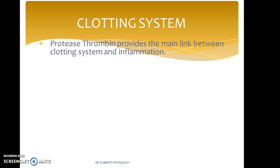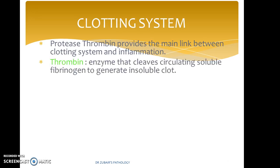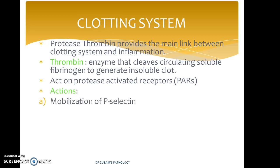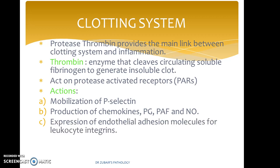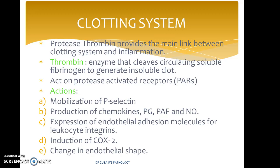In the clotting system, the protease thrombin provides the main link between the clotting system and inflammation. Thrombin is an enzyme that cleaves circulating soluble fibrinogen to generate an insoluble clot. It acts on protease-activated receptors. Its actions include mobilization of P-selectin, production of chemokines, prostaglandins, platelet activating factor, and nitric oxide, expression of endothelial adhesion molecules for leukocyte integrins, induction of COX-2, and change in endothelial shape.